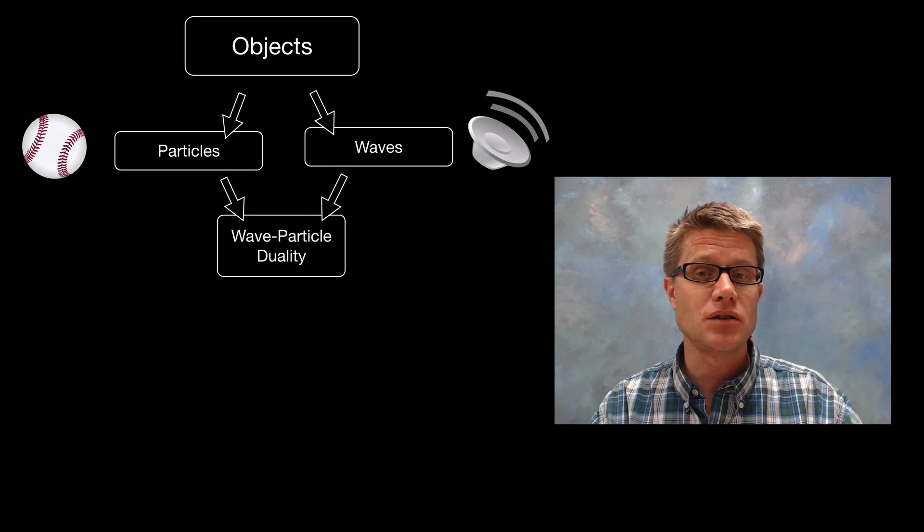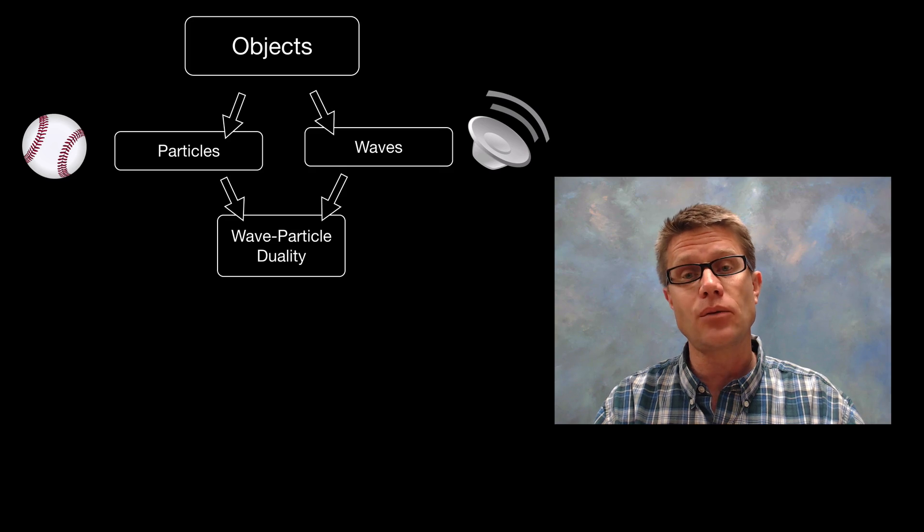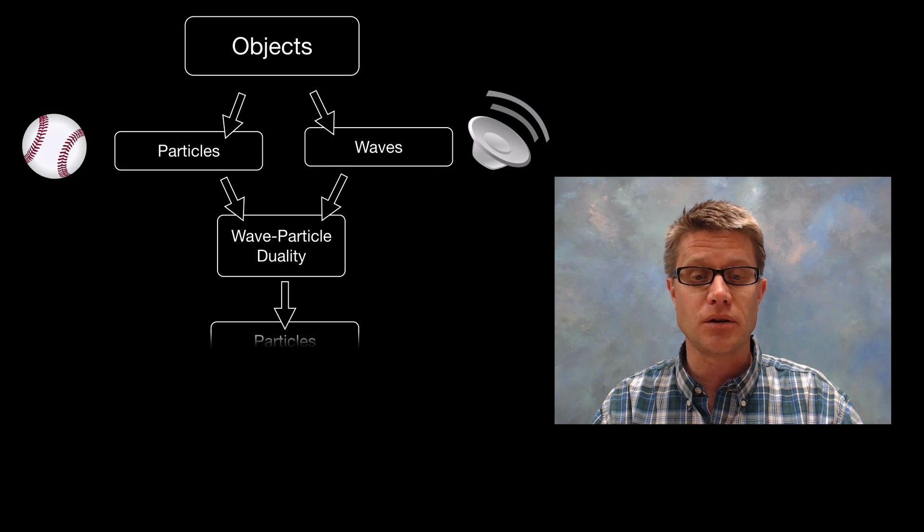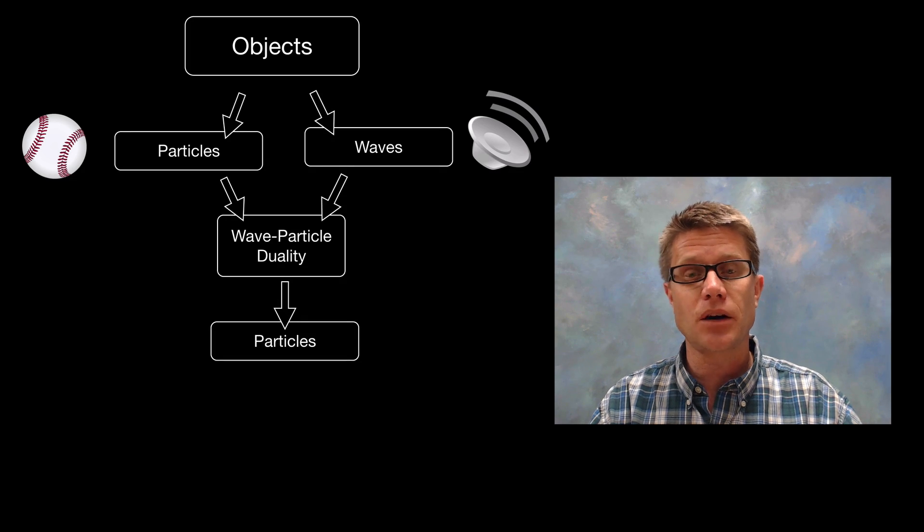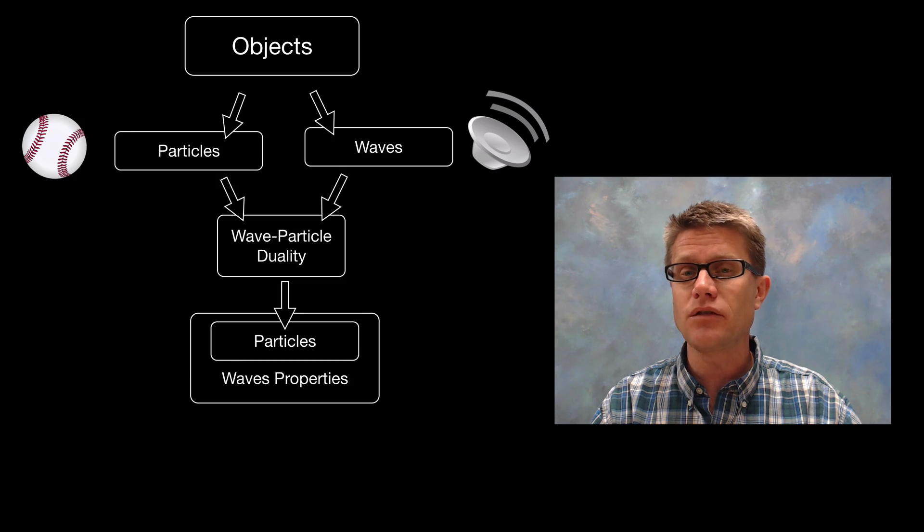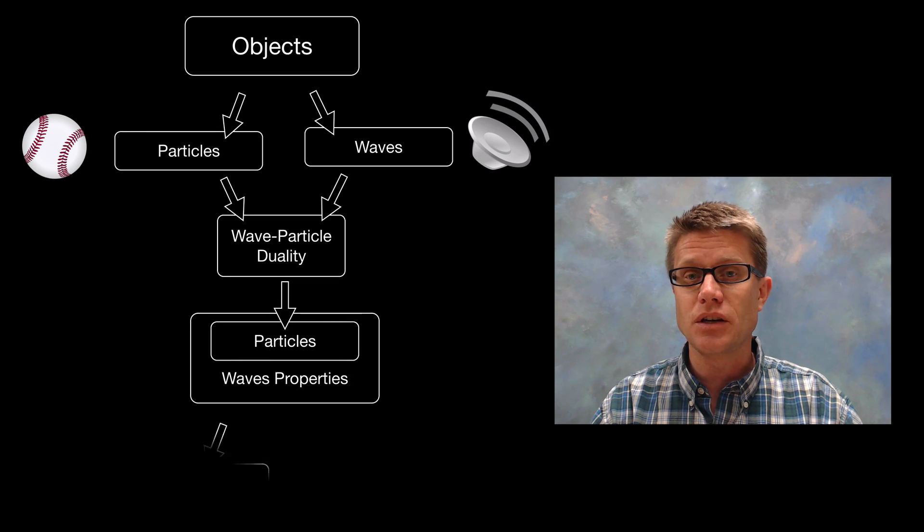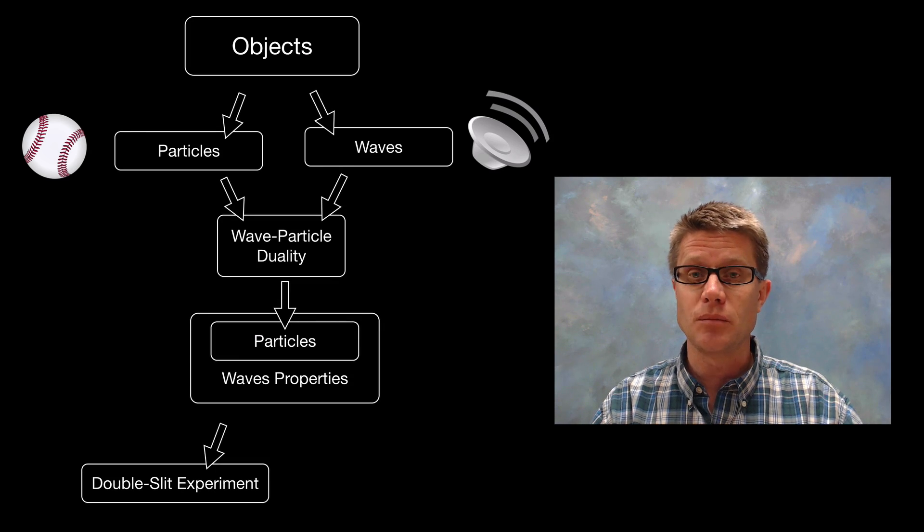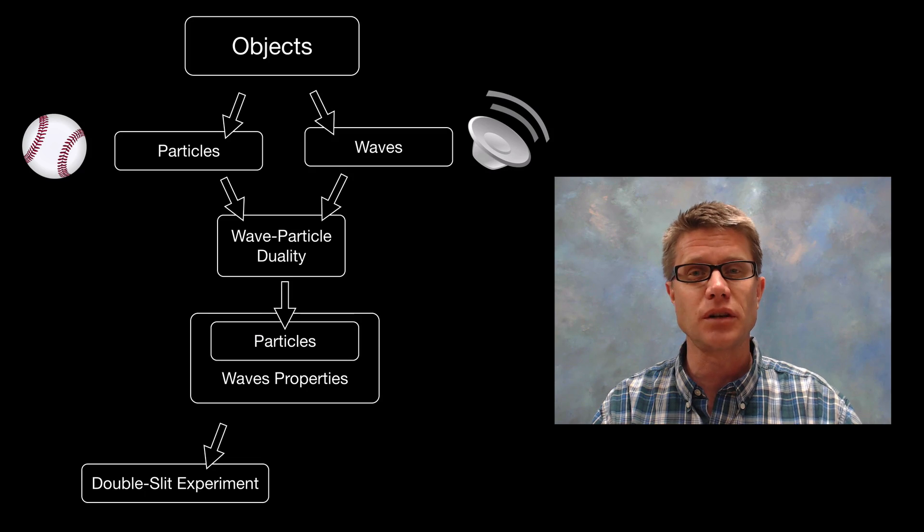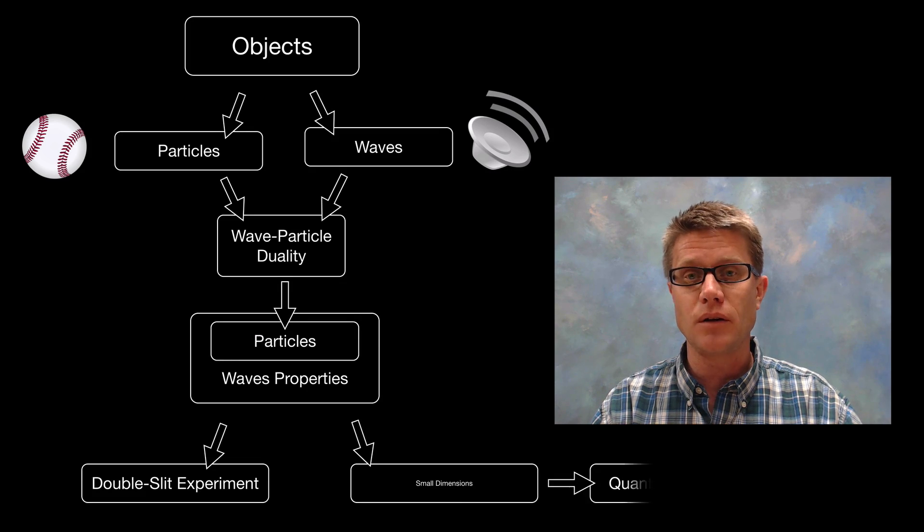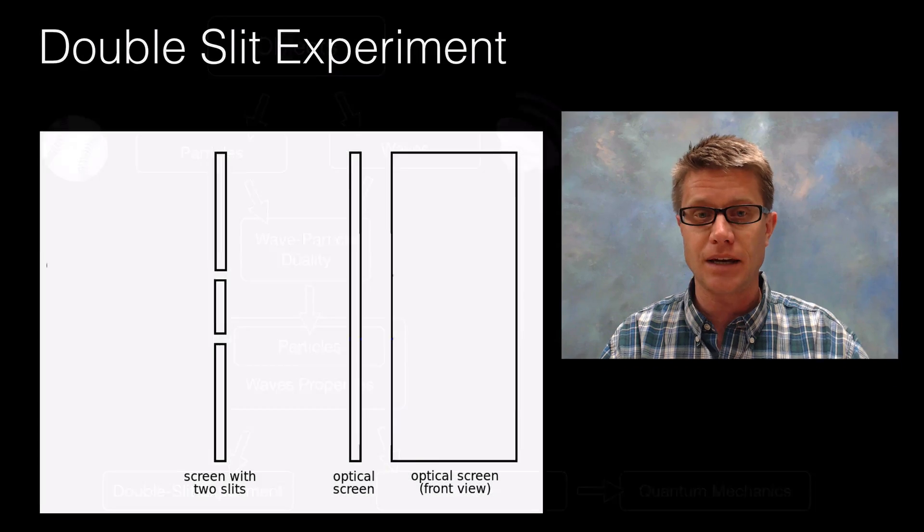And so what scientists have found is that there's this duality. Particles act like waves and waves act like particles. And in this video we're going to talk about how particles have wave properties. And this was first seen in the double slit experiment. Which is kind of counterintuitive. But it will show you what's going on in the world of the very small. The world of quantum mechanics.